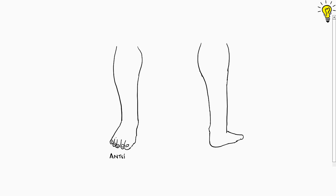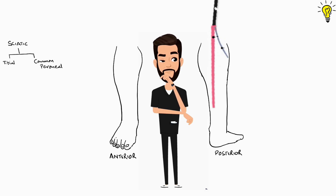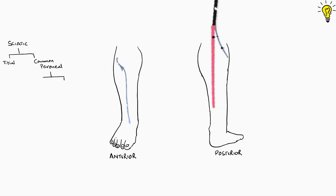Popliteal sciatic nerve block is all about targeting the area below the knee till the toes. The sciatic nerve, coming posteriorly, bifurcates roughly 7 cm above the knee into the tibial nerve and the common peroneal nerve, also called the common fibular nerve for its location in the fibular area. The common peroneal nerve moves from posterior to anterior side of the leg, where it divides into the deep peroneal nerve and the superficial peroneal nerve.